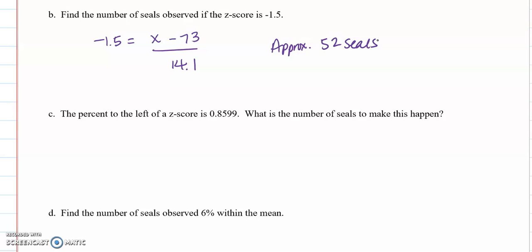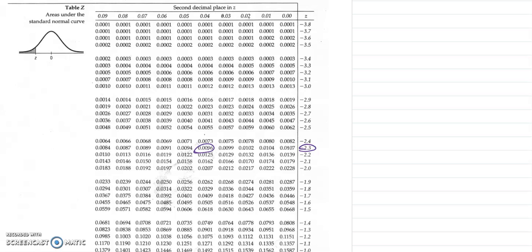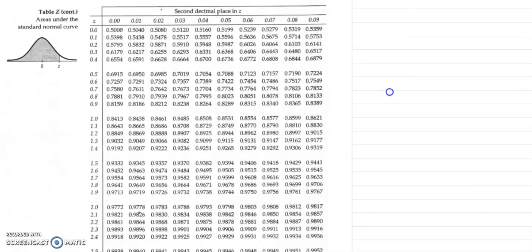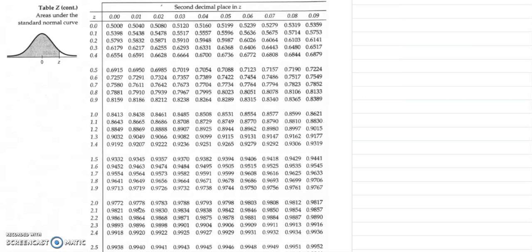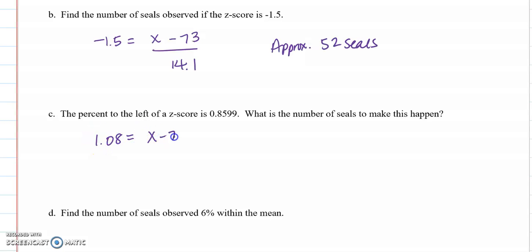In part c the percent to the left of the z score is 0.8599. What is the number of seals to make this happen? So there's actually two things that we're going to have to do. We need to first figure out what z score corresponds to 0.8599 and then we're going to have to do this step again to figure out the data value. So let's explore in our z table. Knowing that our percentage is 0.8599 I know that my z score should be positive because it's really big and now you really just kind of have to look which of these values seems closest to 0.8599. So there it is 1.08 so that's our z score and then we do the exact same calculation that we just did. So this time when you reverse operation so multiply by 14.1 add 73 this gets you approximately 88 seals.